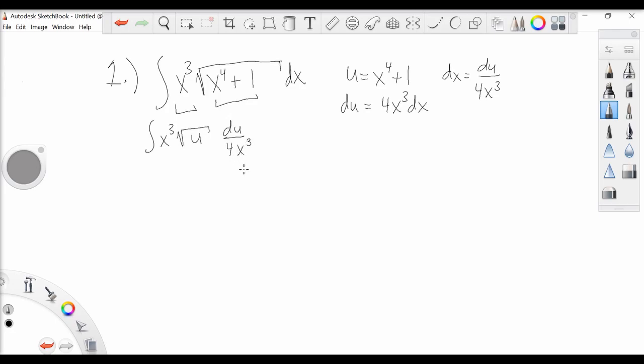This is where that thinking comes in of having one expression that is the derivative of another, because now our x cubed cancel, leaving us simply with the integral of one-fourth times the square root of u du.